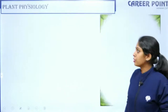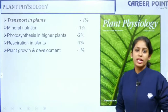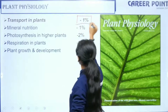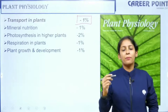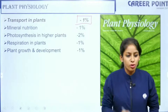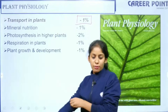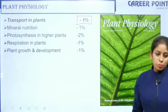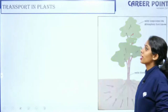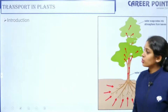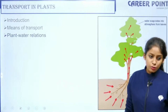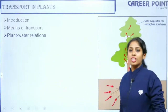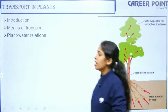Plant physiology has five chapters and we are done with all five. Here we are in 'Transport in Plants,' which has a weightage of only one percent, but the concepts are pretty tricky. The topics we covered include: means of transport — active and passive — and plant water relationships. This is our weakest area, not just for you but for all students who study it for the first time.